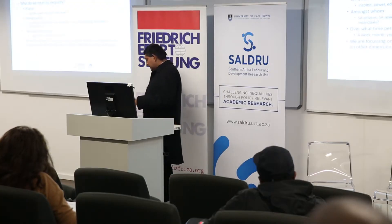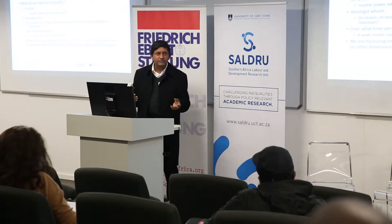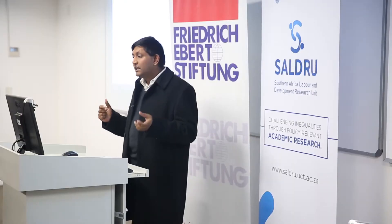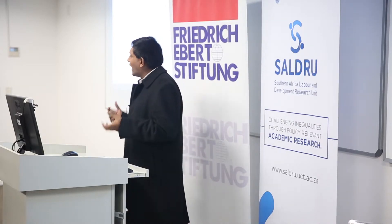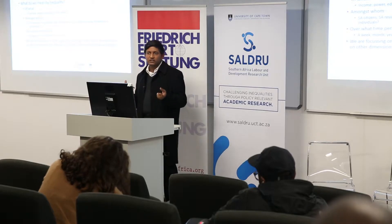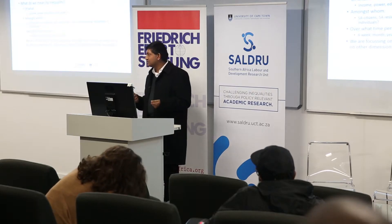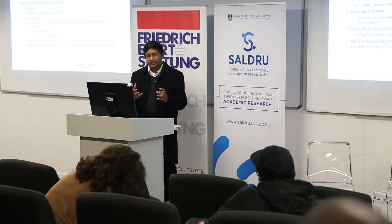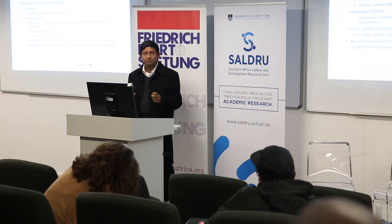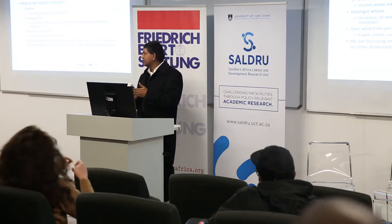When we talk about inequality — and you'll read about it all the time in the newspapers — what do we mean? And inequality of what? There are several different dimensions in which inequality could be manifest. We could talk about racial inequality, gender inequalities, income inequalities, power, education, land, assets — there are all sorts of important things that people could mean when talking about inequality, and many times we're not very precise about it. One useful thing is to ask someone which dimensions precisely they're talking about.